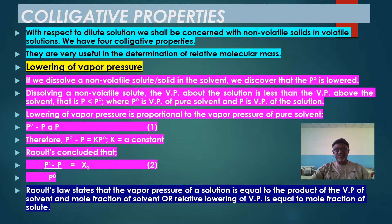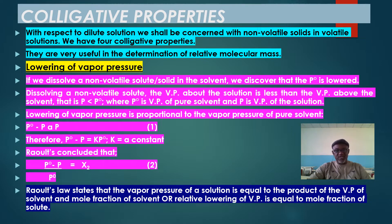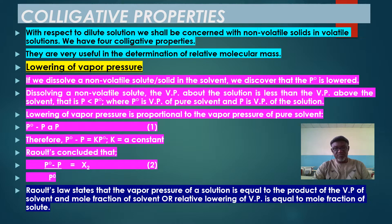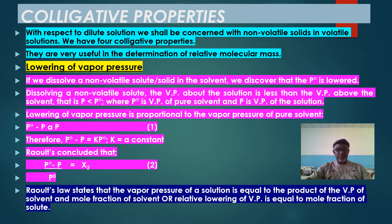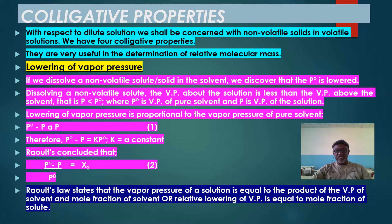These colligative properties involve non-volatile solids dissolved in volatile solvents. Based on that, we have four colligative properties: lowering of vapor pressure, elevation of boiling point, depression of freezing point, and osmotic pressure. In this particular module, we look at two of them. The first is lowering of vapor pressure. If we dissolve a non-volatile solid in a solvent, we discover that the pure vapor pressure is lowered — the vapor pressure above the solution is less than the vapor pressure above the pure solvent.